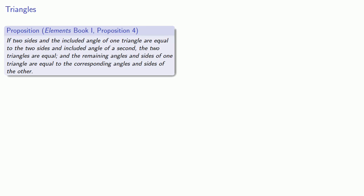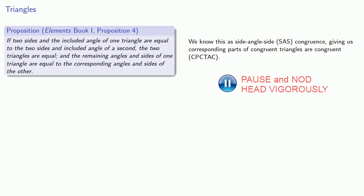Now, Euclid's phrasing is different from our own, but don't get lost in the words. We know this as the side-angle-side congruence, giving us the corresponding parts of congruent triangles are congruent, CPCTC. And you might ask yourself, why do we talk about congruence when Euclid talks about equal? To understand the reason, let's take a look at Euclid's proof.